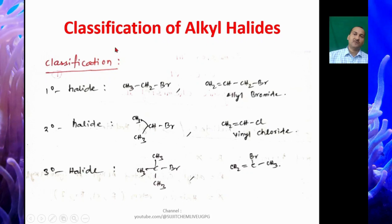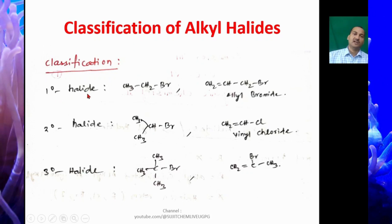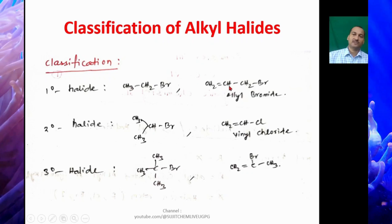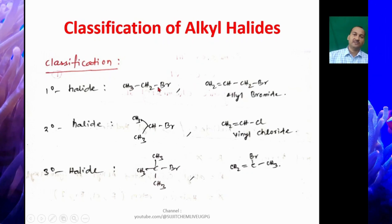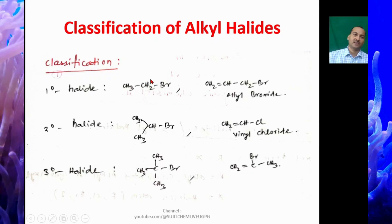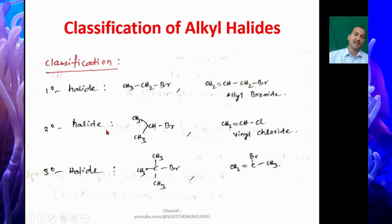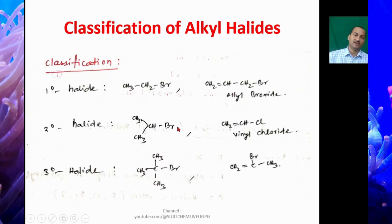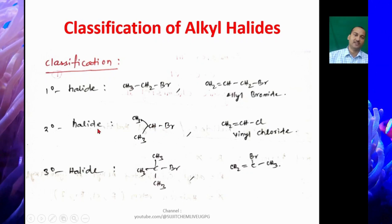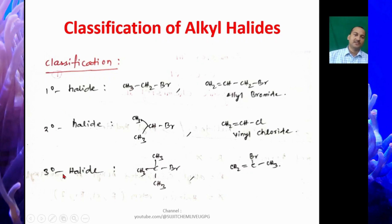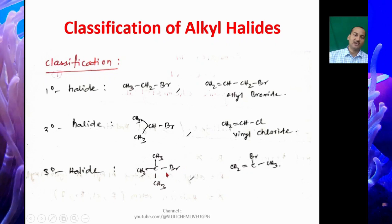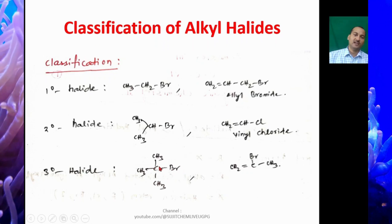Classification of alkyl halides: First is primary halide — the carbon bearing the halogen must contain two hydrogens, for example CH3CH2Br or allyl-type CH2=CH-CH2Br. Second is secondary halide — the carbon bearing the halogen contains at least one hydrogen, for example CH3CHBrCH3. Third is tertiary halide — the carbon bearing the halogen contains no hydrogen, for example (CH3)3CBr.